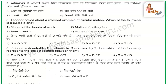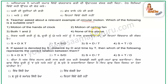The next question: the teacher asked for a relevant example of circular motion. The hands of a clock move in circular motion, and a ceiling fan also moves in circular motion. So the answer will be both option one and option two.